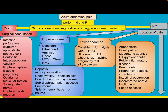If there are no signs of acute abdomen, management depends on pain location. For upper abdominal pain, consider ultrasound, amylase, lipase, liver function tests, and chest X-ray. Differential diagnosis includes hepatitis, acute pancreatitis, cholecystitis, Fitz-Hugh-Curtis syndrome, sub-diaphragmatic abscess, pneumonia, and splenic hemorrhage or trauma.